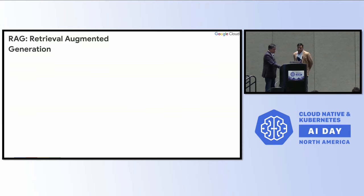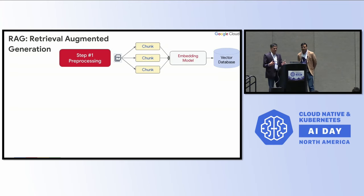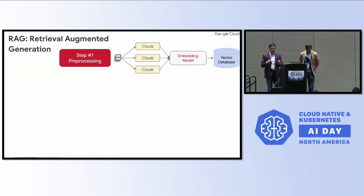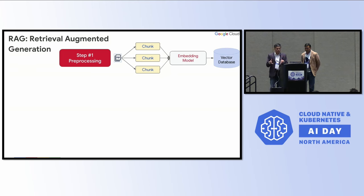If you look at RAG, we can break it down in three phases. The first phase is pre-processing — you bring in your enterprise data and have a pipeline that breaks the data into smaller chunks. With those chunks, you use an embedding model to create vectors, which are stored in a vector database. There are strategies around how to chunk the data, what the chunk size should be, what embedding model to use, and where they should run.